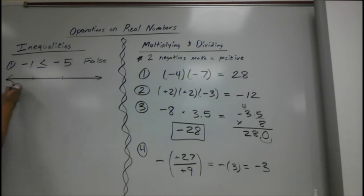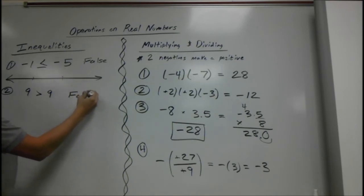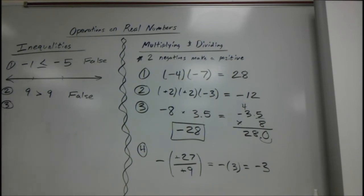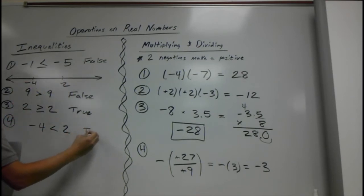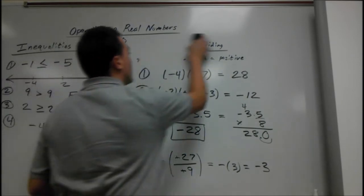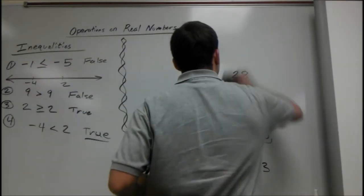And you can use the number line for any of these problems. Number two, nine is greater than nine. We know nine can't be greater than itself, so that one's false. If it's something like two is greater than or equal to two though, since that little equal sign is there, that means this is true. And four, negative four is less than two. So yes, four is a higher number than two, but since it's negative, if we look at the number line, negative four is definitely less than two. So this is a true statement.